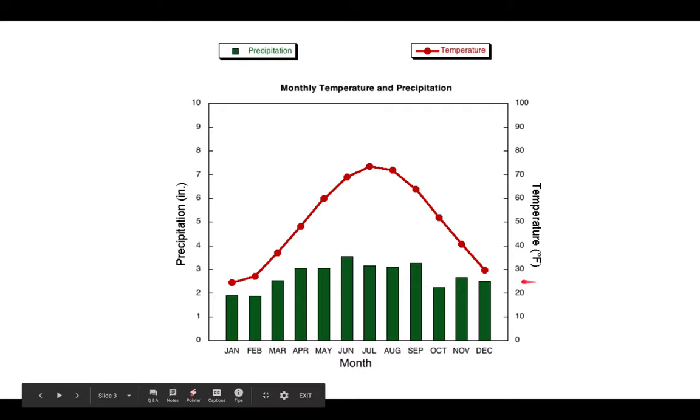That even includes November and December. So very cold winters. They do get a decent amount of precipitation, almost three inches. So if it's that cold, you can also expect snow.